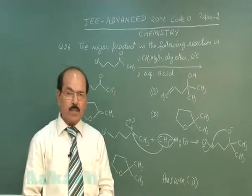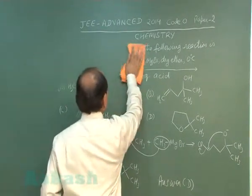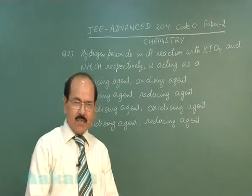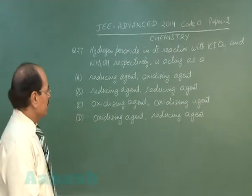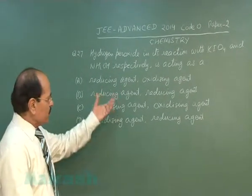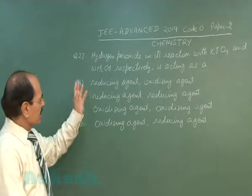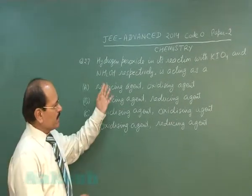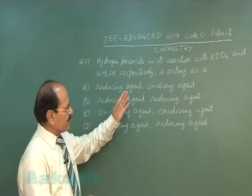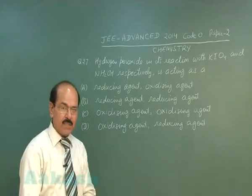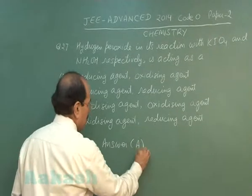We now move on to the next question, that is question number 27. The question says: hydrogen peroxide in its reaction with KIO4 and hydroxylamine respectively is acting as — four options are given. Hydrogen peroxide reduces potassium periodate and oxidizes hydroxylamine. Therefore, in these reactions, hydrogen peroxide is functioning as a reducing agent in the first case and an oxidizing agent in the second case. The correct answer is option A.